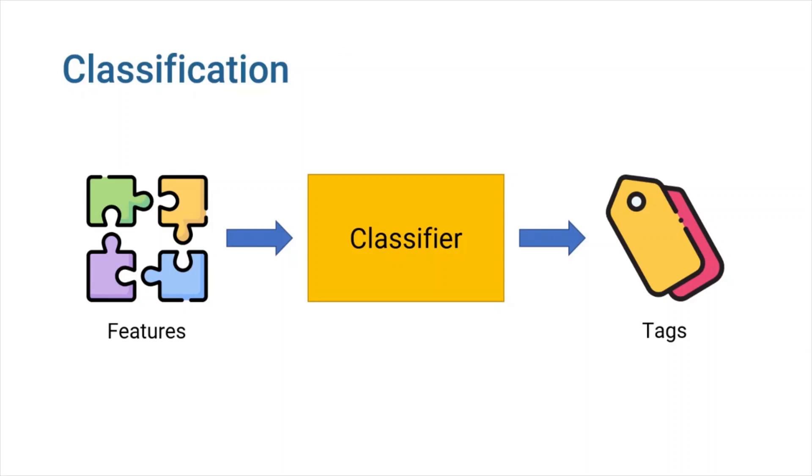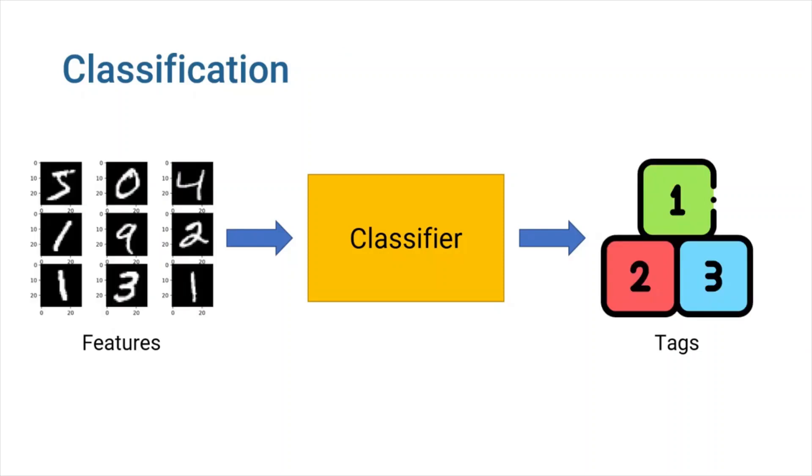Classification is a supervised learning mechanism for labeling a sample based on the features. For example, our classifier may be able to separate input images of handwritten numbers into 10 categories from 0 to 9. In this example, the features could be the color of each individual pixel in the input image.